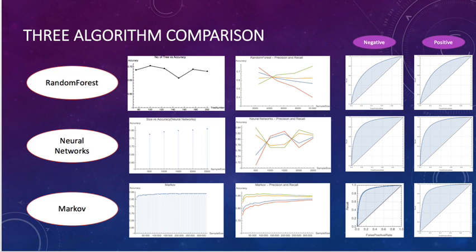The third graph shows this line is almost horizontal, which means Markov is stable around 0.83. In the second column, it shows the precision-recall graph, and we can see the complementary relationship between precision and recall. In the third and last column, it shows the negative and positive ROC curves for these three algorithms. We can see that Markov is more close to the upper left corner, which means Markov is more accurate.